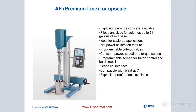The Dispermat AE comes with that C technology package. If you're looking to program a recipe, store data on a stick or PC for lab reports, or watch the dispersion process in real time on a graphical interface, you have these capabilities with that model. It's really good for upscale. You can get larger models, similar to the CN, all the way up to 31 gallons of mill base. Explosion-proof models are available.